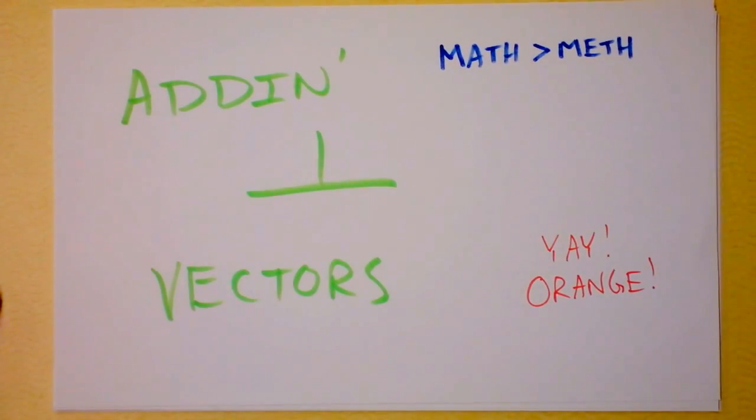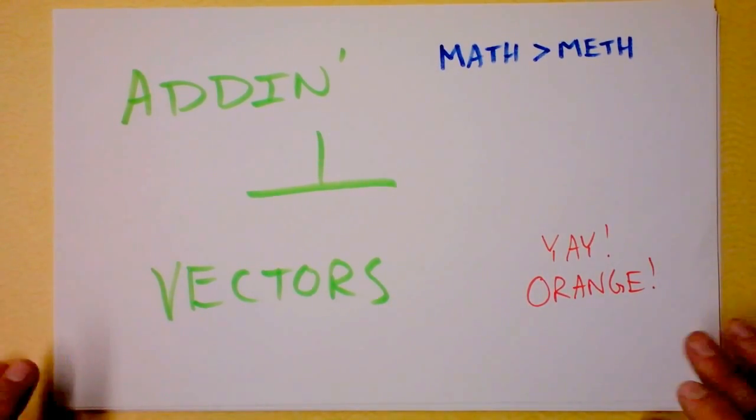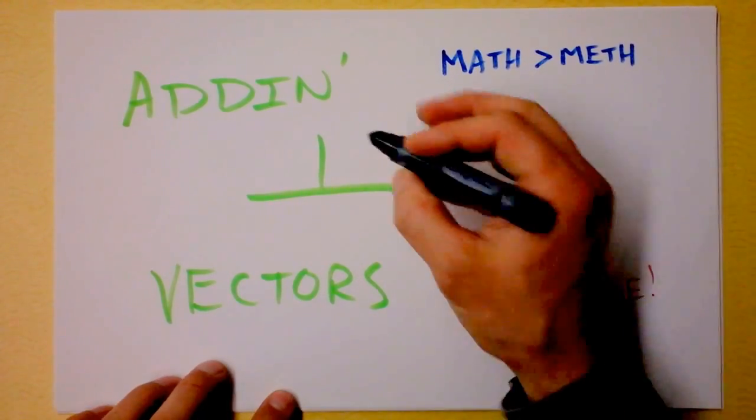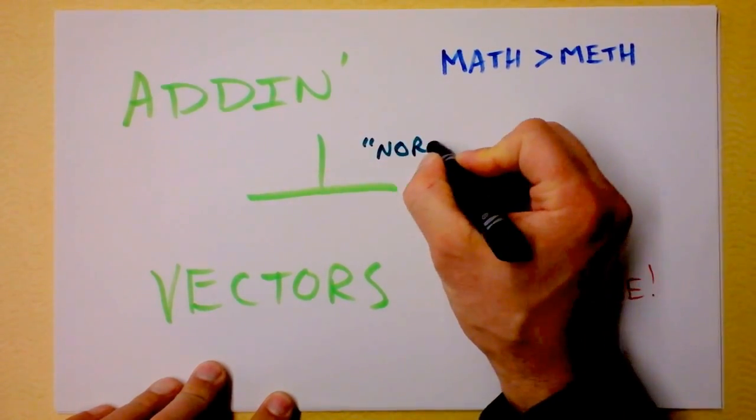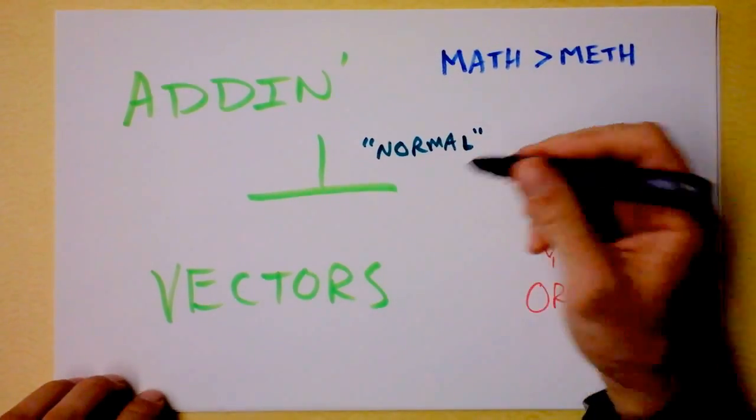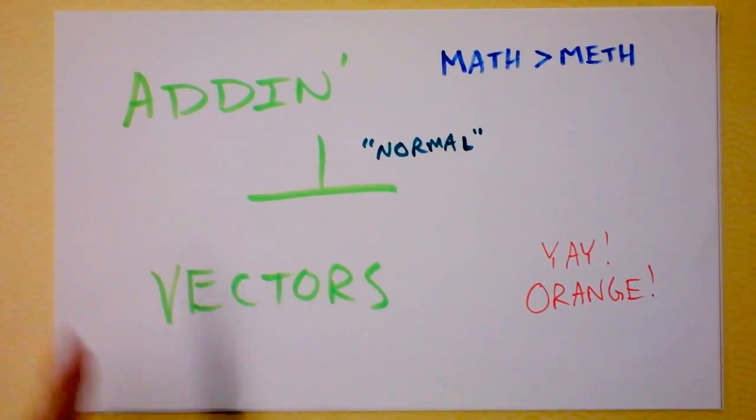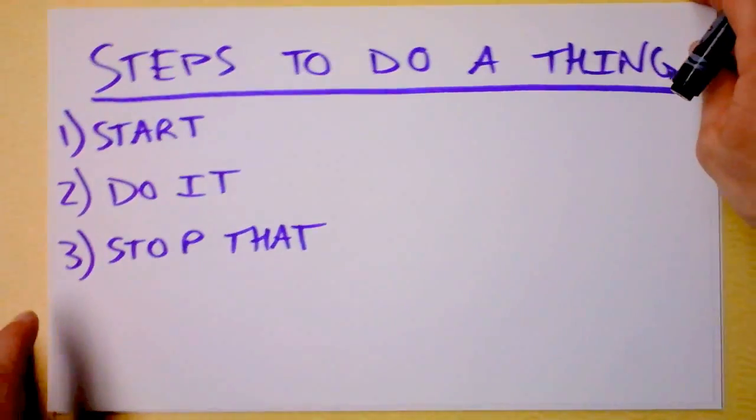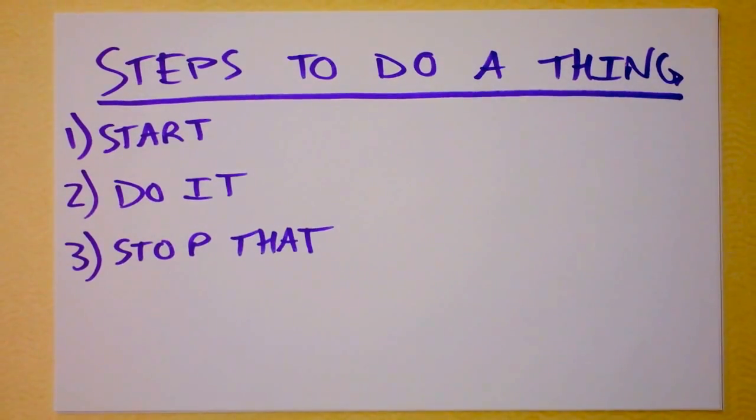Hey! I hope you've come here from the adding vectors graphically video because that was a sad place for me. It was a rougher time. We want to add vectors that are normal to each other. This is pronounced normal because that's the first definition of the English word normal. There's a P word, but I don't want you to use the P word in this case. These vectors are normal to each other. So I made some steps to add vectors that are normal to each other. Those are not the steps.